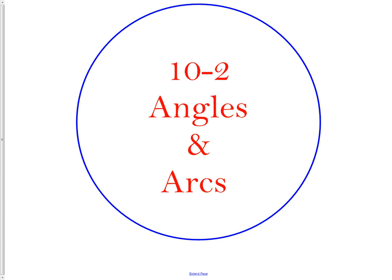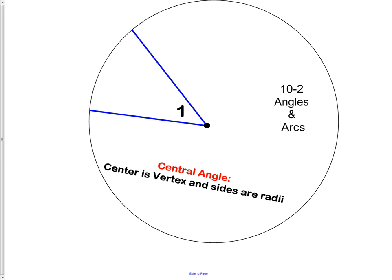Our study of circles is now moving on to angles and arcs. The first angle we want to talk about is a central angle. For a central angle, our definition is the center is vertex and sides are radii. A little funny wording, but we're trying to word this small enough so it can fit into your circle notes. The key here is the center of the circle is the vertex of the angle and the sides are called radii.